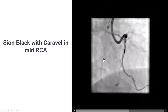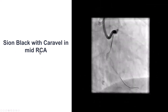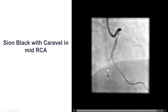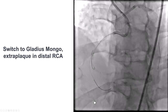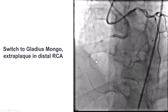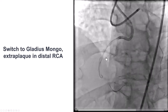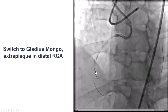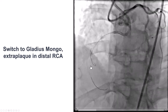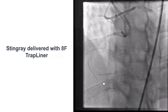We tried different things. We tried with a C-on-black during the RAO projection to see if we could advance down into the RCA. After multiple attempts, we were able to advance a knuckled Gladius Mongo guide wire along the course of the RCA. We were now moving along with the vessel — we know we're extrapluminal, but we're moving with the vessel.